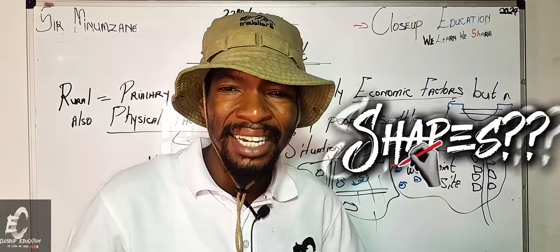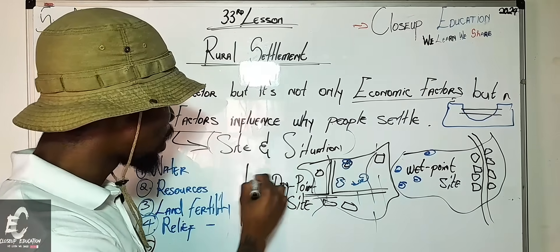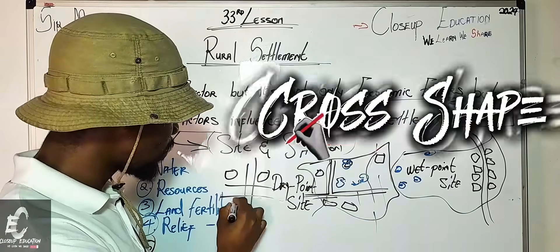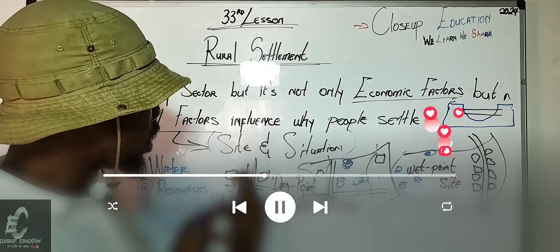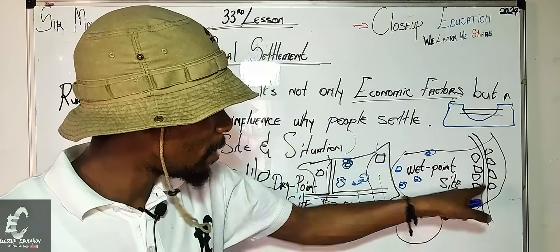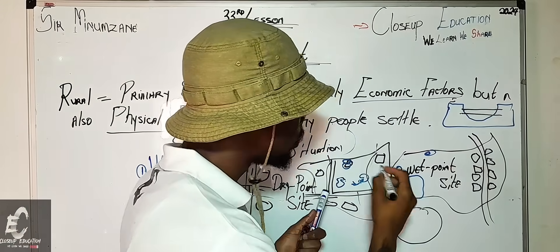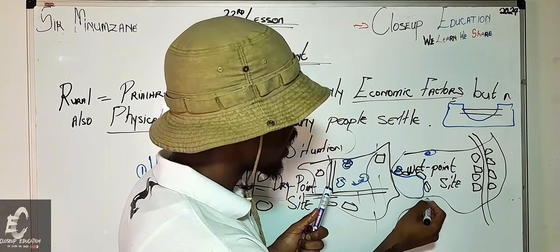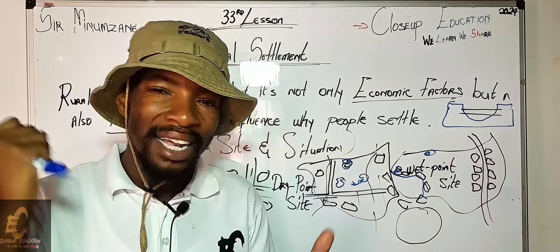Let's review the settlement shapes commonly taught. There is the linear shape — settlements along a line. There is also the crossroads or X-shape — settlements built at an intersection of roads or rivers. There is also a circular or secular shape, which forms when there is a dam: settlements surround the dam in a circle. So our shapes are linear, crossroads (X-shape), and circular.